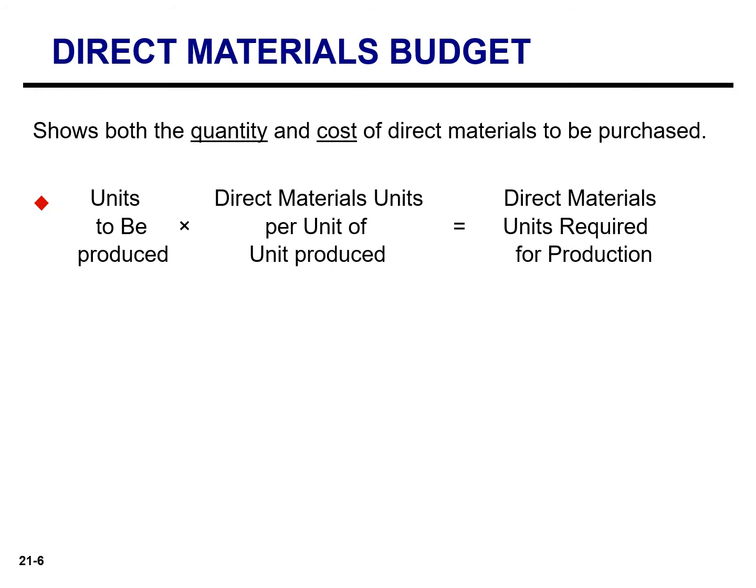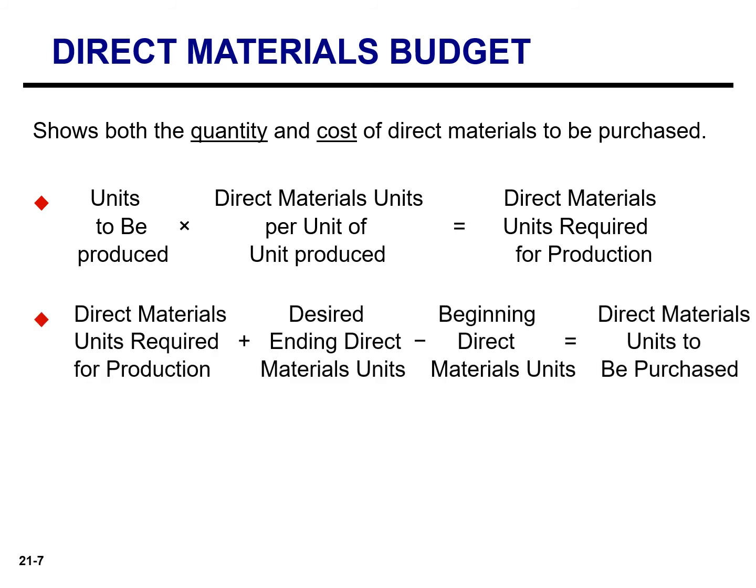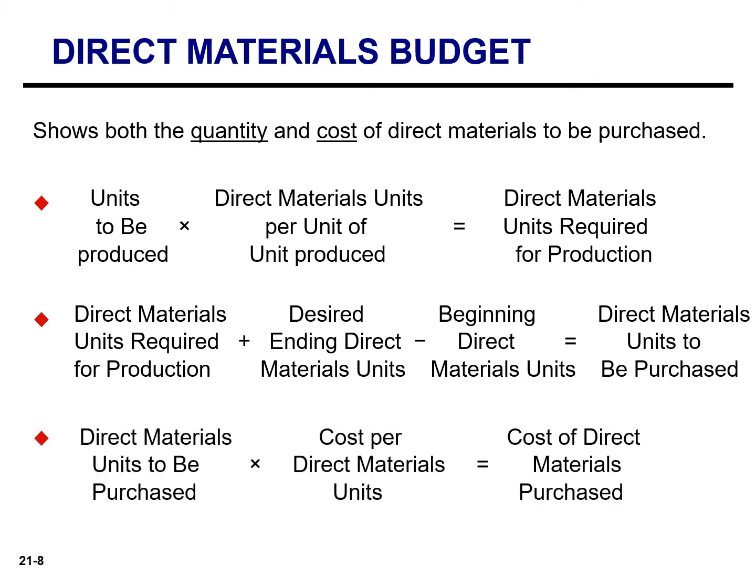The direct materials budget shows both the quantity and the cost of direct materials to be purchased. The first step is to compute the direct materials units required for production: start with units to be produced from the production budget, and multiply by the direct material units per unit produced. Next, add desired ending direct material units and subtract beginning direct material units to arrive at direct material units to be purchased. Finally, multiply units to be purchased by the cost per direct material unit to get the total cost of direct materials purchased.